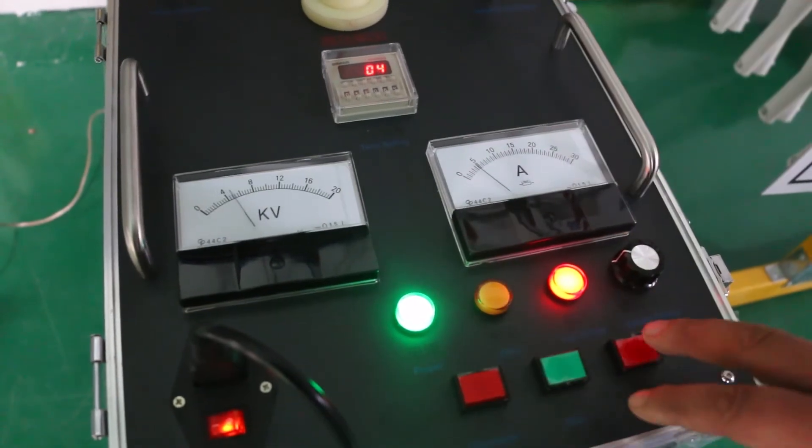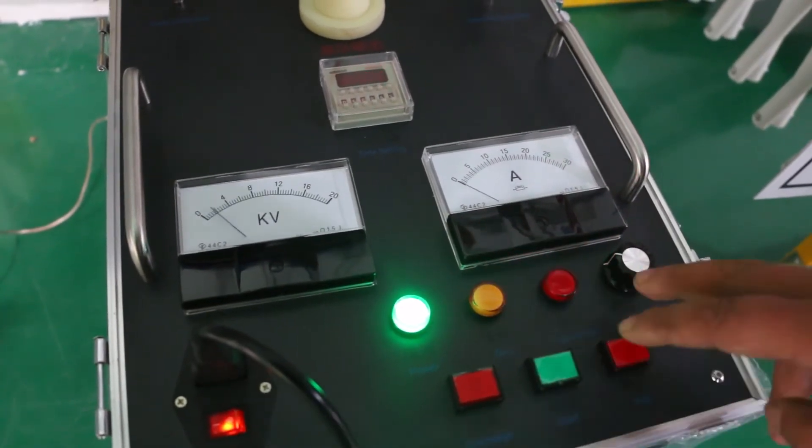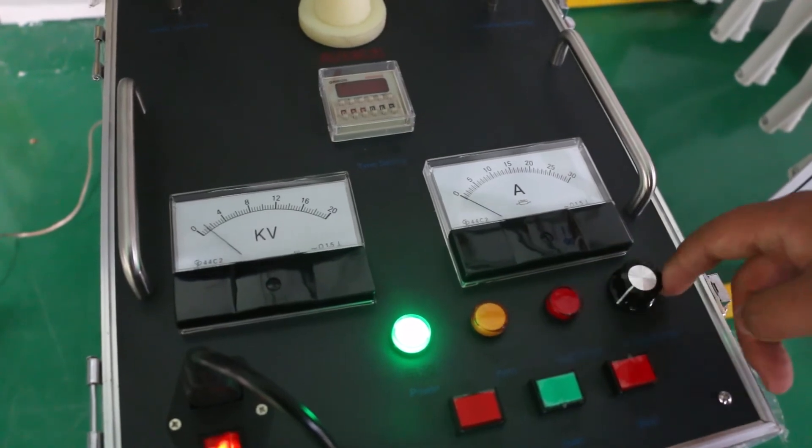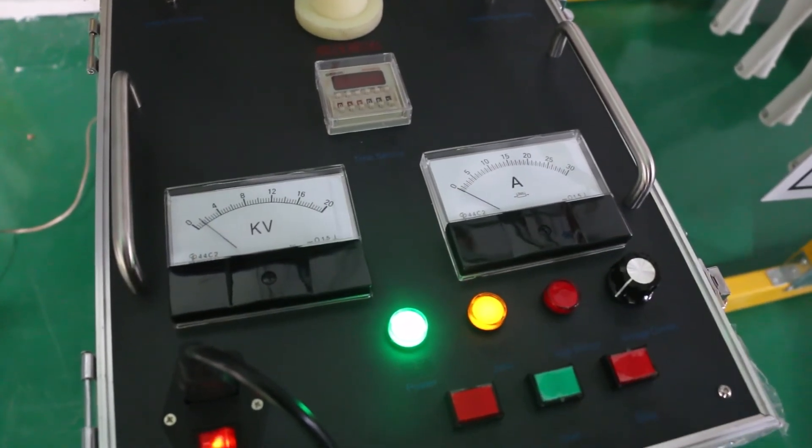Third, after finishing the test, press stop button quickly, turn voltage regulator to zero anti-clockwise, and the zero indicator lights on.